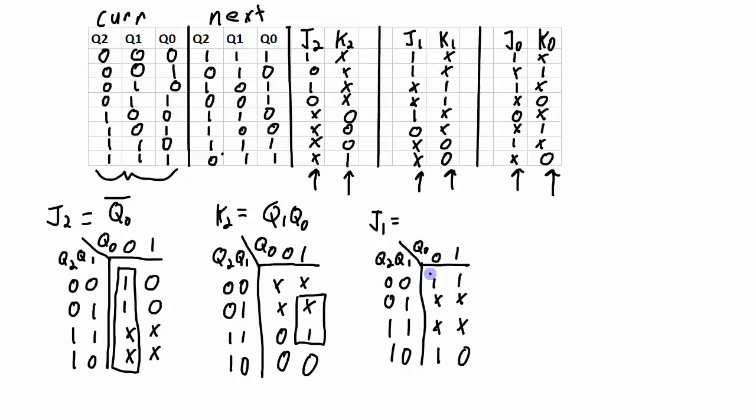For this K map, we need two groups, there, and there, that group of four. And we get J1 is equal to not Q0, or with what this group is, which is not Q2.